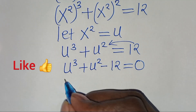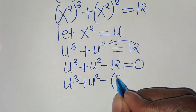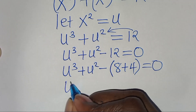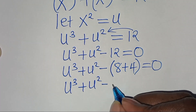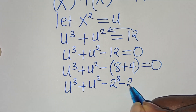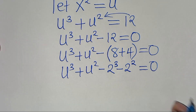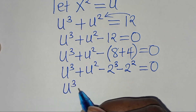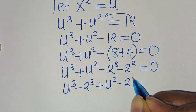Here we can have u to the power of 3 plus u to the power of 2 minus 12, which we can express as 8 plus 4, this is equal to 0. So we have u to the power of 3 minus 2 to the power of 3, plus u to the power of 2 minus 2 to the power of 2, this is equal to 0.